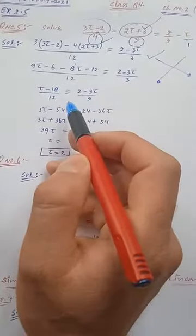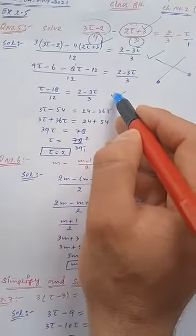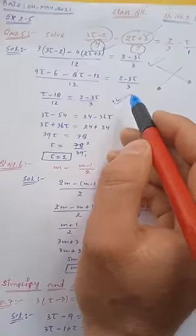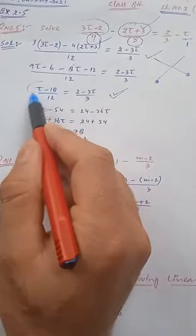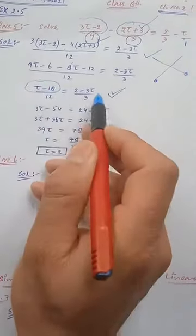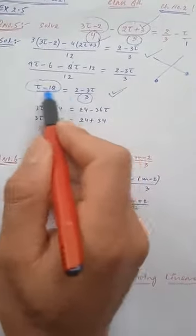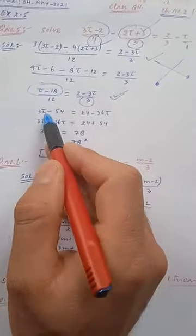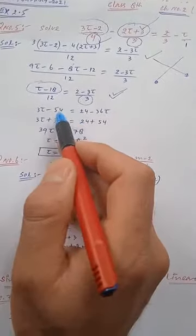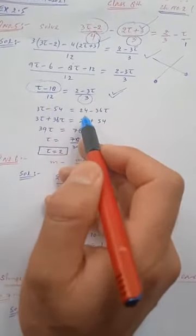Cross multiplication again. I am telling you how to do it: you will multiply t - 18 with 3, you are multiplying opposite numbers. So 3 × (t - 18), 3t minus 3 × 18 is 54, is equal to 12 × 2 that is 24.